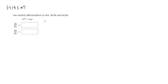First we're going to take the partial derivative with respect to x. In this case, y is considered to be a constant. Z is a function of x and y. So the derivative of e to the 5z with respect to x is going to be e to the 5z multiplied by 5 times the partial of z with respect to x.